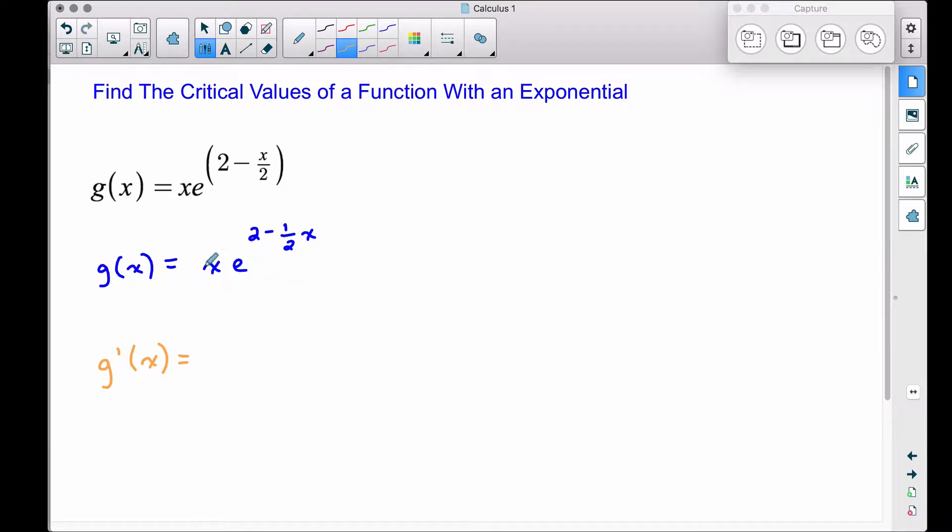So product rule, let's take the derivative of this. The derivative of x is one, and we leave this other function alone for right now. So we have e to the two minus one half x.